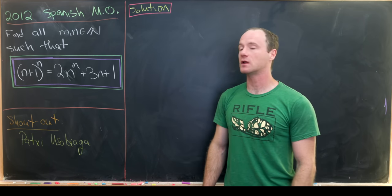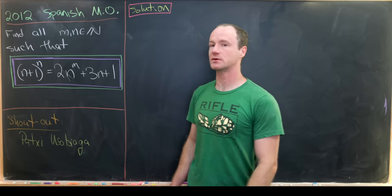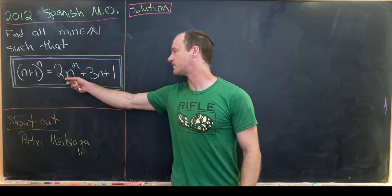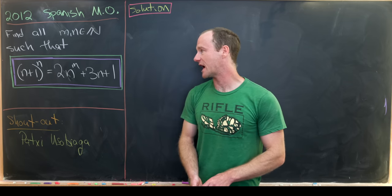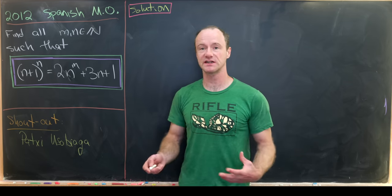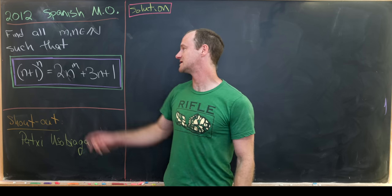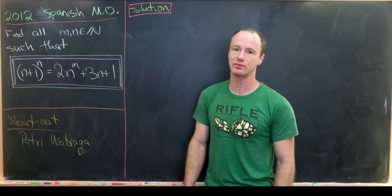So anyway, let's find all m and n, which are natural numbers, and by natural numbers I mean positive integers, satisfying the following equation. So we have (n+1)^n = 2n^m + 3n + 1.